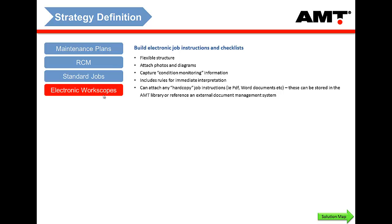Strategy definition for us is a lot more than just saying we're going to do an engine at 16,000 hours. It's about identifying what your strategy is for optimizing the life of that component — condition-based, run to failure, or scheduled. It defines what parts are needed, expected labour requirements, and the associated job instructions. So the planner doesn't have to second-guess — when he's told he's got to plan for an engine, the parts, labour, and job instructions are all listed. The more you can define upfront, the more it streamlines your downstream workflow processes.